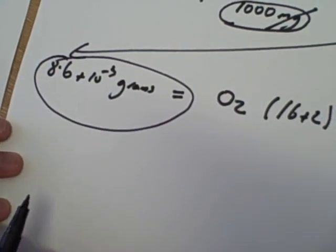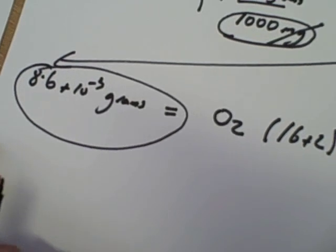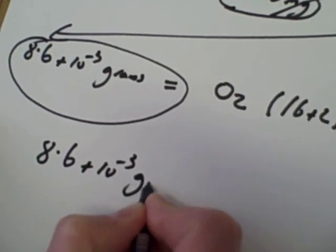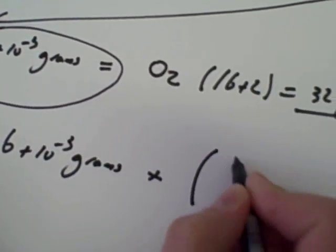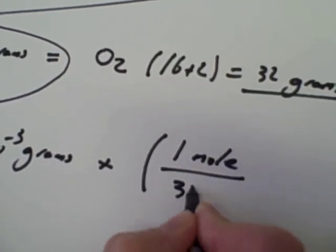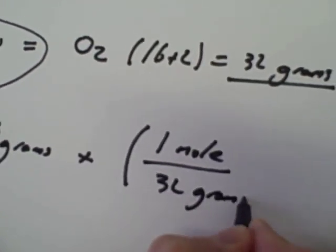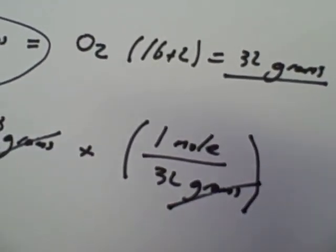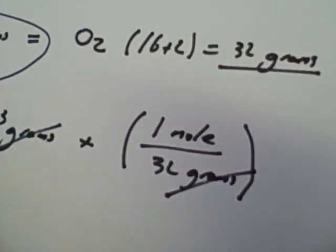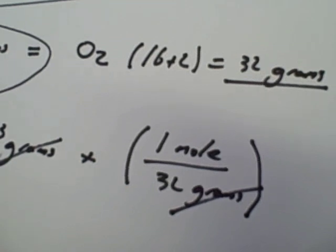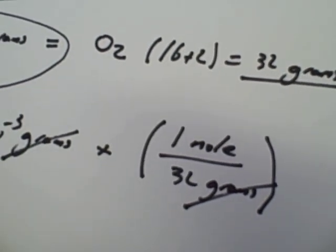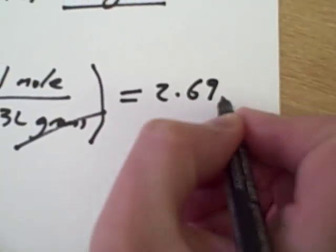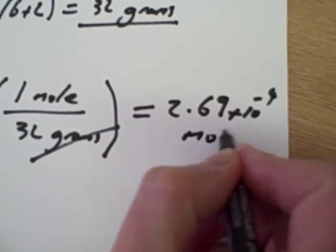Clearly I haven't got 32 grams — I've got a lot less than that, so my answer is going to be quite low in terms of moles. So, 8.6 times 10 to the minus 3 grams, multiplied by one mole over 32 grams. All I'm doing here is trying to get rid of the grams terms so I'll get my answer in moles. The grams will cancel each other out, giving me an answer of 2.69 times 10 to the minus 4 moles.